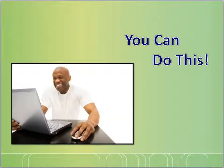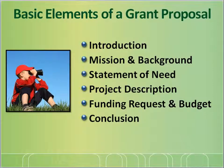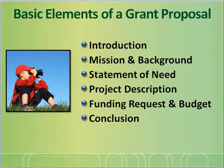As mentioned previously, you can do this. Like most of our work, it is about breaking down the work challenge into accomplishable pieces that you can handle. Learning about basic elements of a typical grant proposal can help you develop the pieces of a standard proposal for an extension program. The basic elements of a grant proposal include an introduction to the project concept and grant request, an explanation of extension's mission and background, a statement of need, a detailed project description, a request for financial support and detailed budget, and a proposal conclusion.